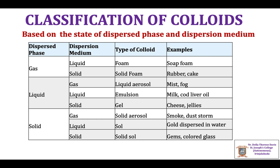There are three states of matter: gas, liquid, and solid. If the dispersed phase and dispersion medium are each one of gas, liquid, or solid, we get 9 possible combinations of colloids. However, gas dispersed in gas is not considered a colloid — it is considered a homogeneous mixture, since gas completely diffuses into another gas. So, neglecting gas in gas, there are 8 different possibilities.